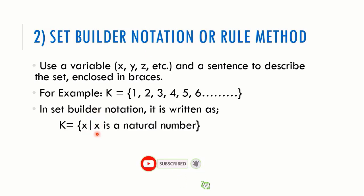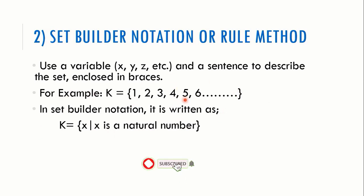In set builder notation it is written as: x slash (such that) x is a natural number. Here you can use any variable x, y, or z, but remember if you use y here, you must also use y in the sentence — the same variable throughout. The slash symbol means 'such that.' This means all numbers in the set are natural numbers.